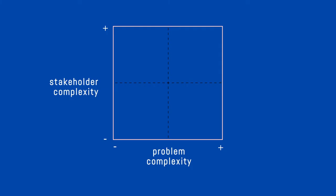Making an extreme simplification, it is possible to predict flooding using modern technology — for example, knowing which areas can be potentially affected and the main causes that might trigger these phenomena. Floods can therefore be placed in the lower left corner of the diagram.